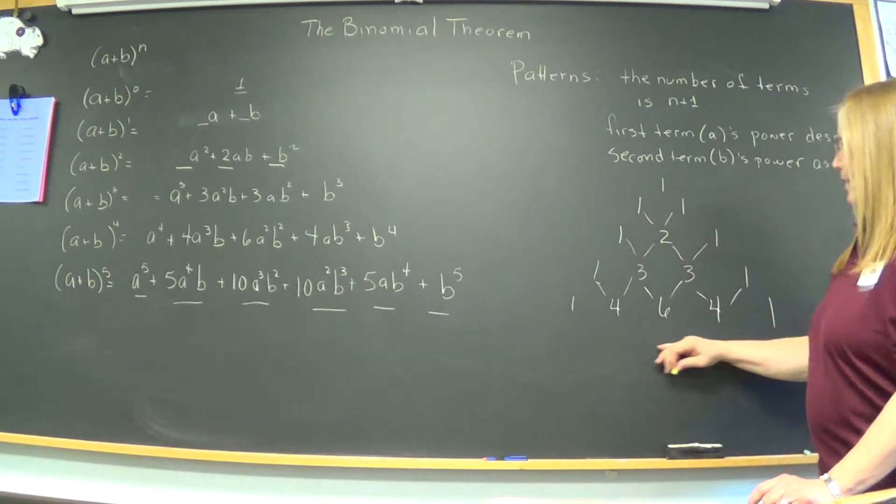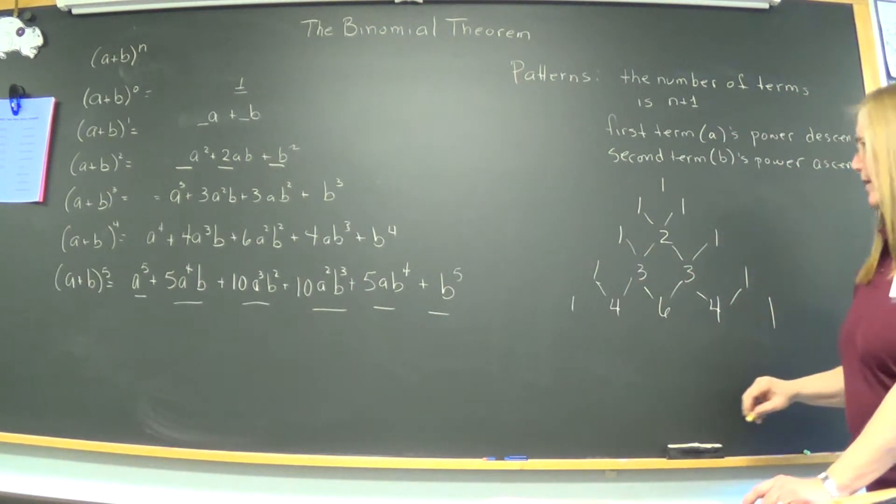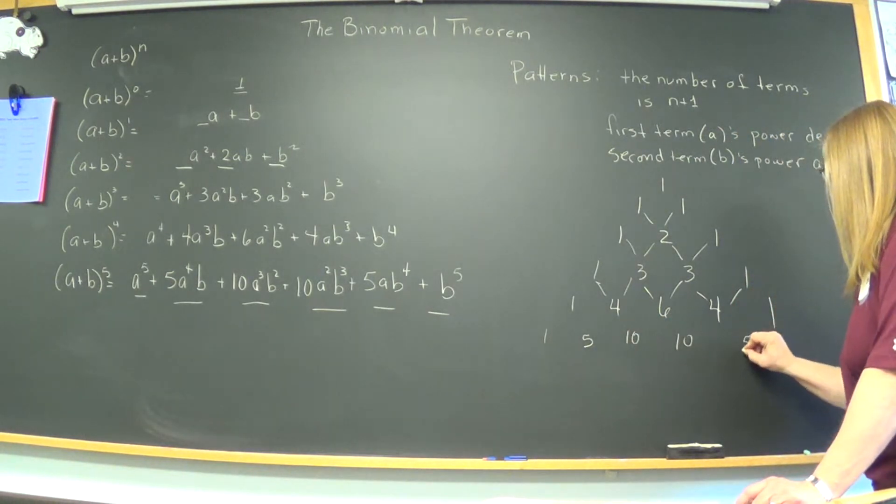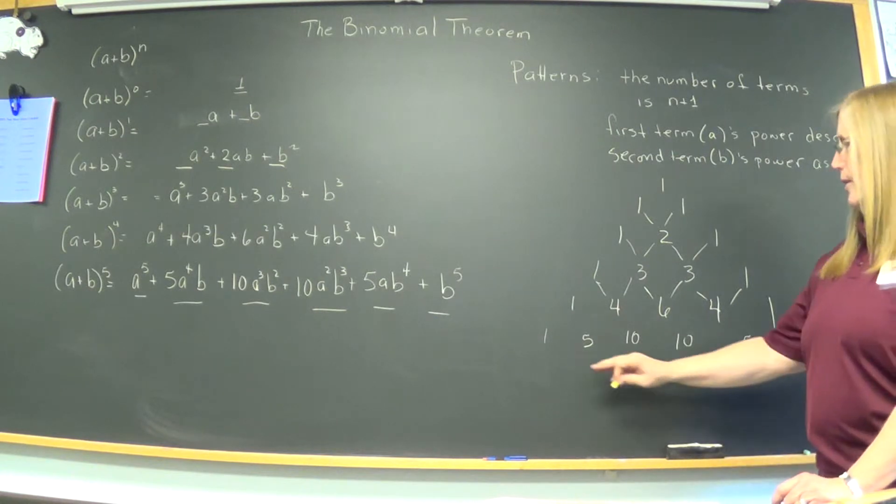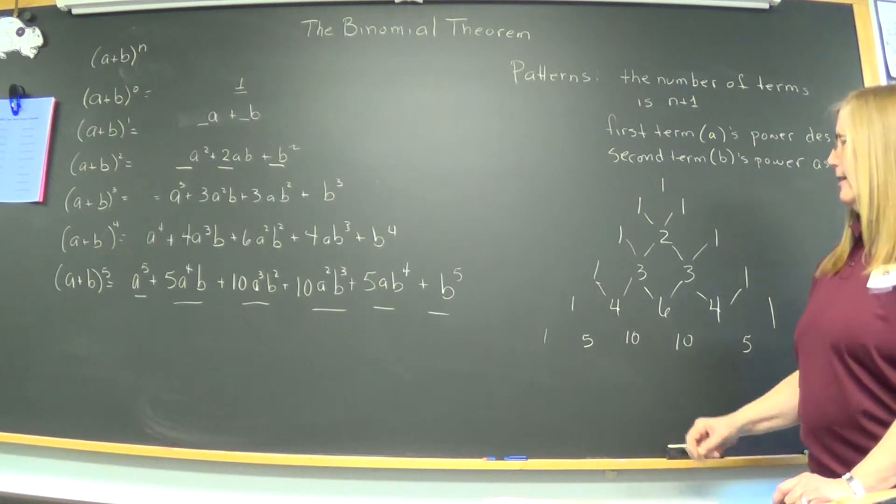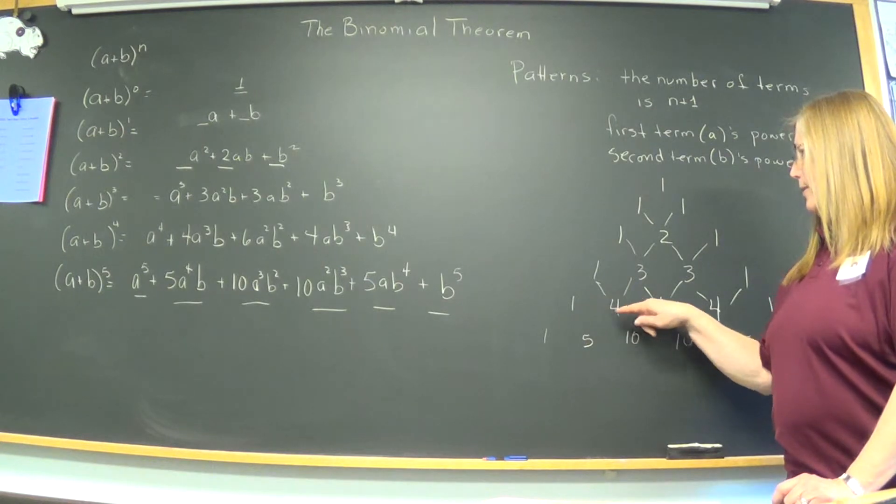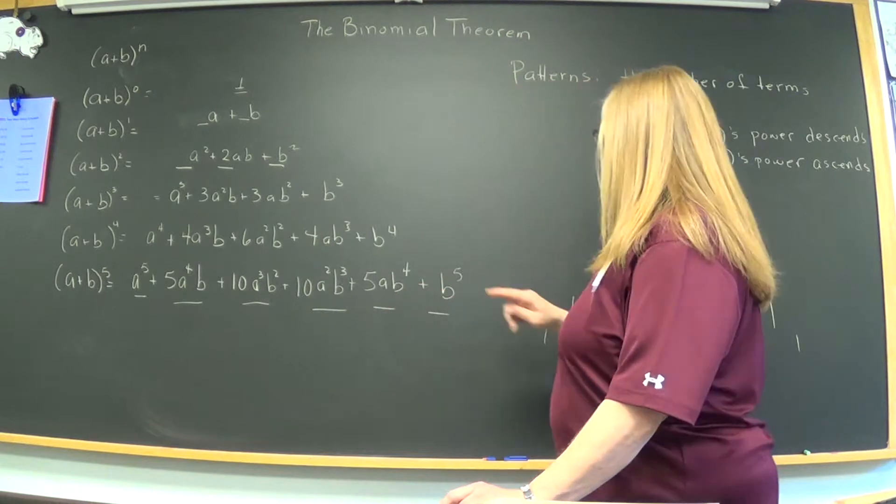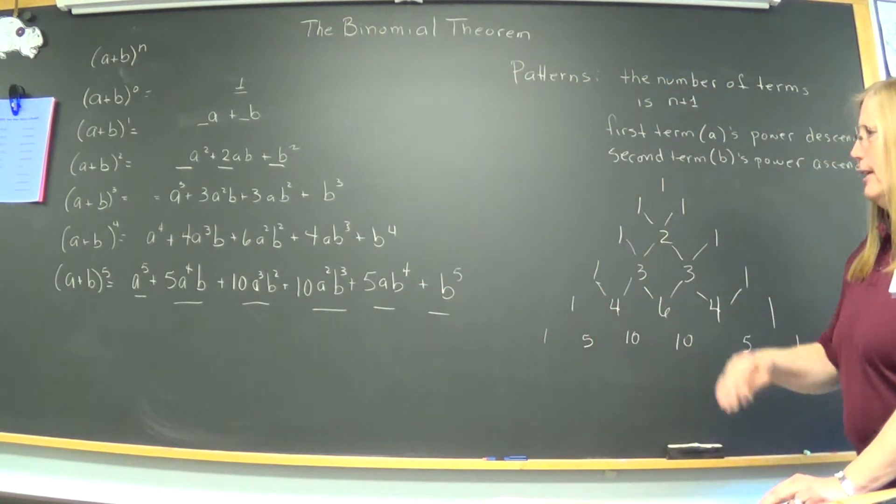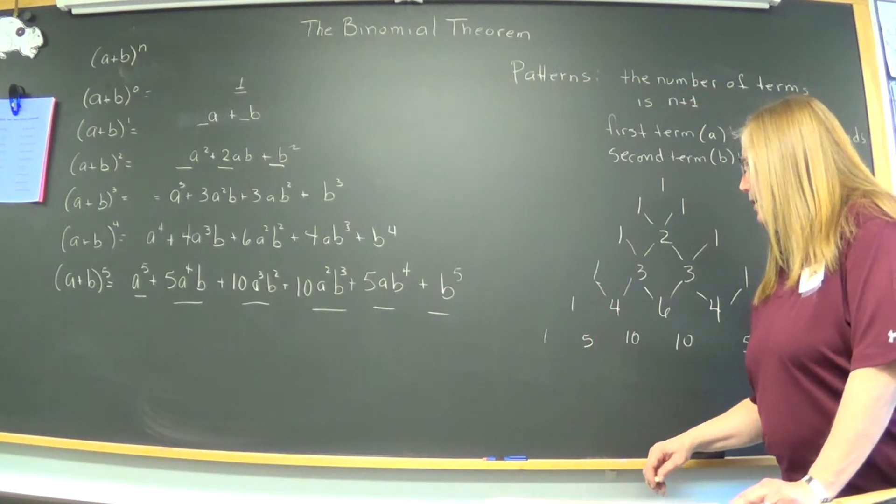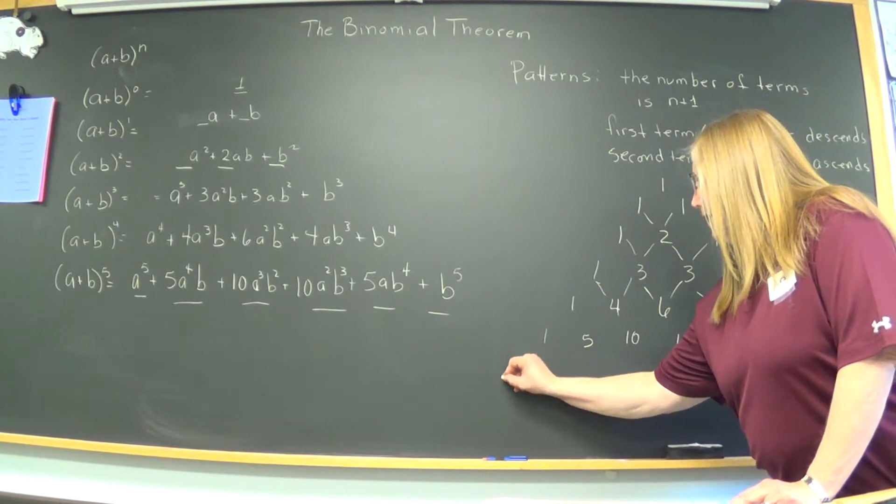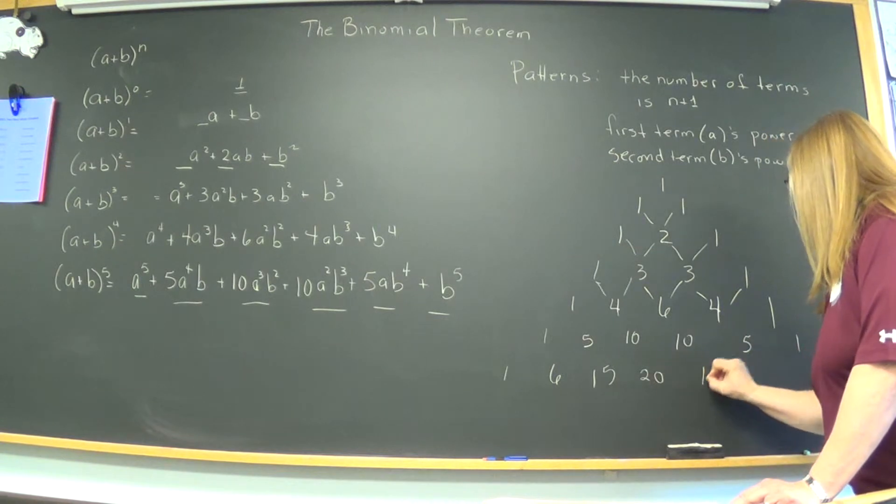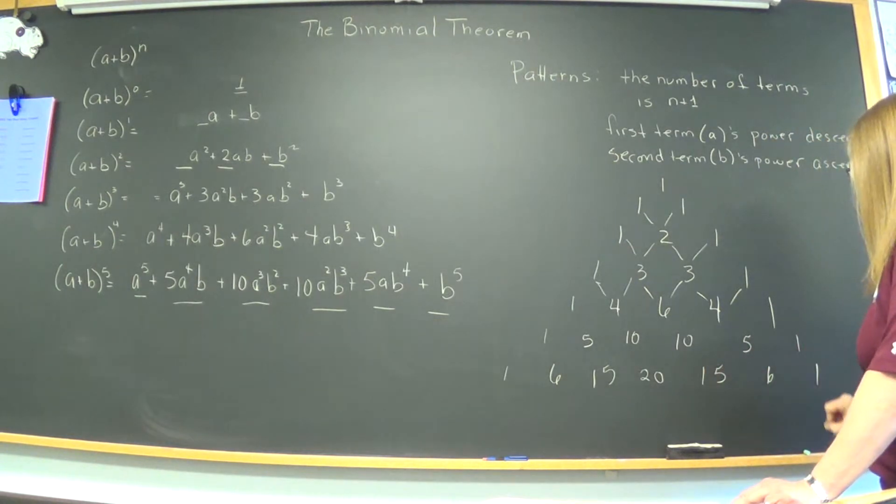So, without looking over there, write in the next row, you start with one and end with one, you get the numbers in between by just adding consecutively the numbers above it. So, did it work? One, five, ten, ten, five, one, and we don't have the answers to the next one, but we're going to use it. So, let's go ahead and develop them.